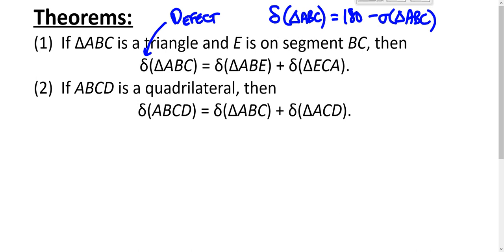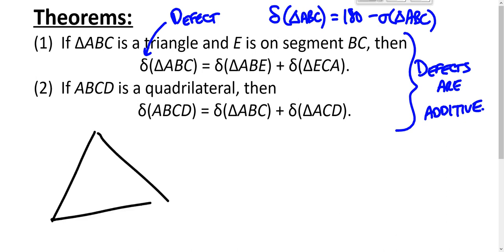What we want to show in this theorem, the important result, is that defects are additive. That is to say, if you have triangle ABC and you have E on segment BC, then the defect of triangle ABC is equal to the defect of this triangle plus the defect of this triangle.